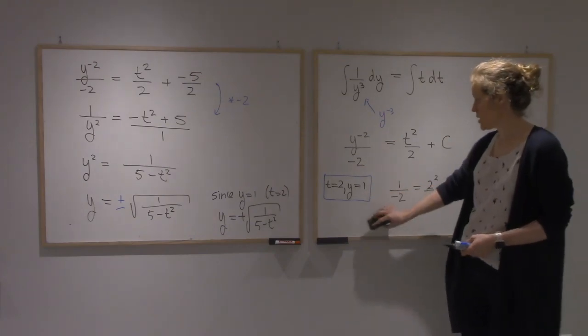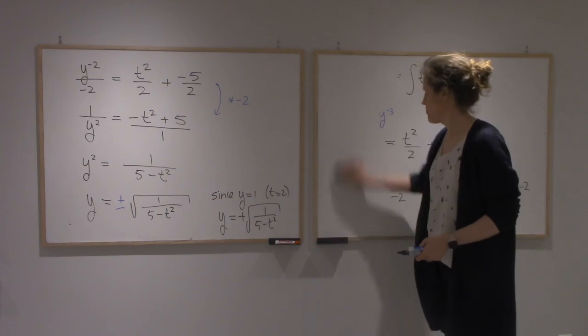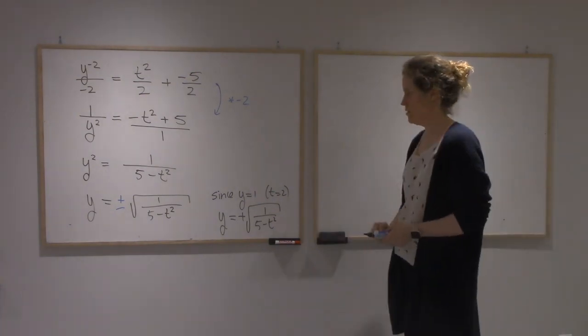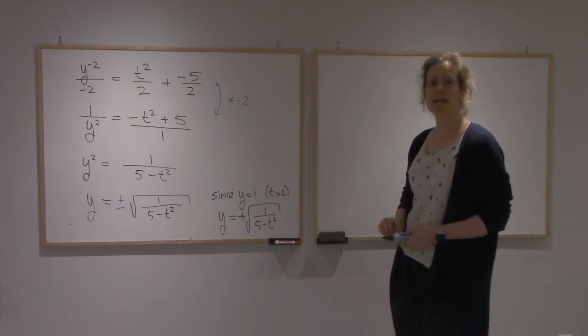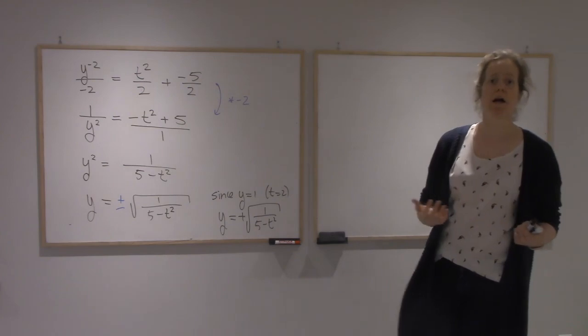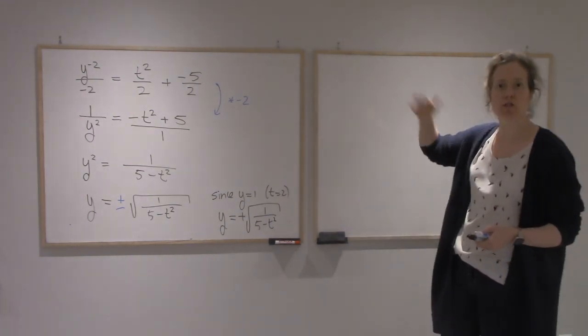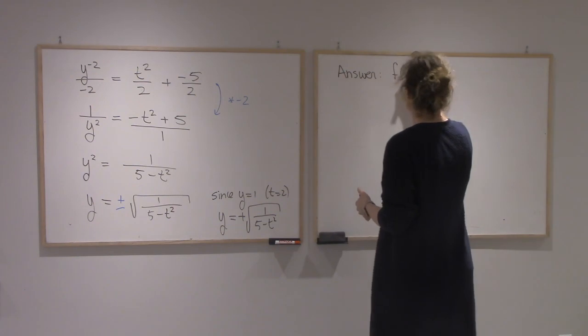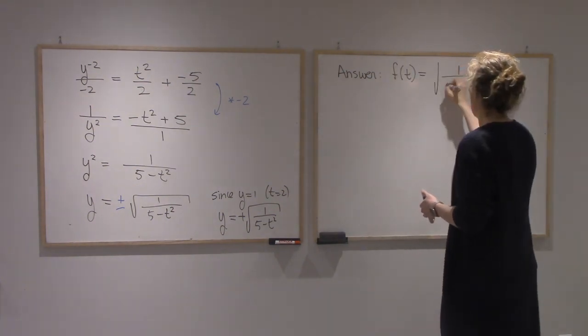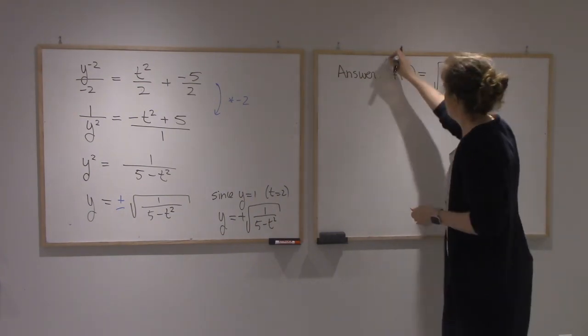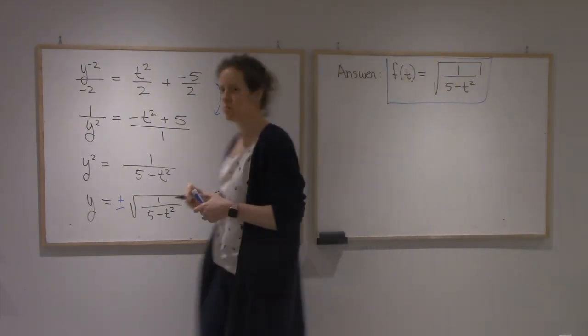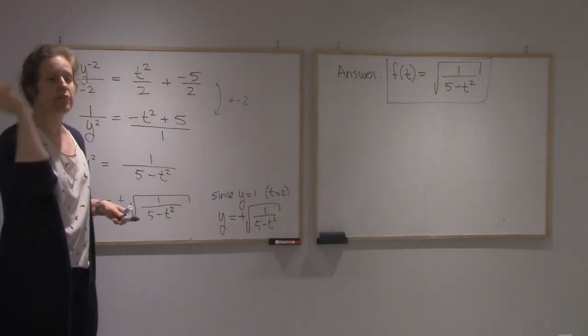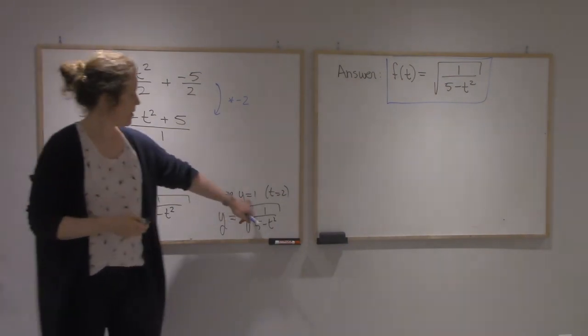Alright, so again, this is using this initial condition that I was given as part of the problem. Alright, so I'm ready to give the answer now. But if you remember, the question wasn't talking about y at all. It had an f in it. So when I write my answer, I should use f as well. So now my answer would be that f of t equals square root of 1 over 5 minus t squared. So this is the only function that fits the differential equation and the initial condition, that f of 2 is 1.